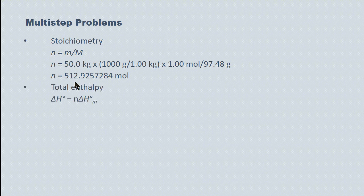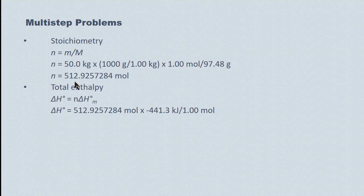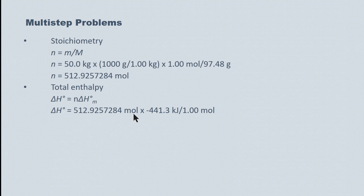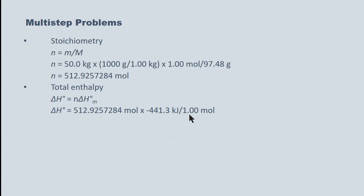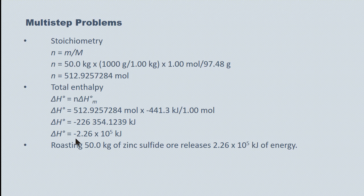Then we do a total enthalpy calculation. Total enthalpy equals molar enthalpy times number of moles, and plug in our values. We've got 512.925 moles of the zinc sulfide, multiplied by the 441.3 kilojoules it requires to roast a single mole. We end up getting a value at negative 2.26 times 10⁵ kilojoules of energy. In English then, roasting 50.0 kilograms of zinc sulfide ore releases 2.26 times 10⁵ kilojoules of energy.